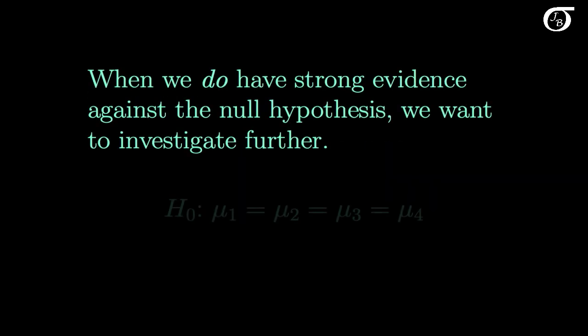When we do have strong evidence against the null hypothesis, we want to investigate that further. This was our null hypothesis in this case, that the four groups all had the same population mean. And we had very strong evidence against this. Very strong evidence that the null hypothesis is not true.